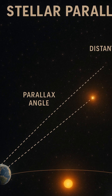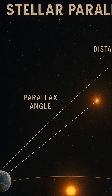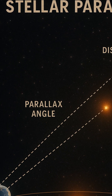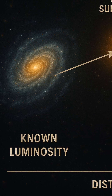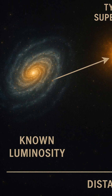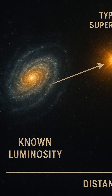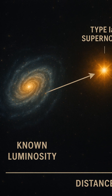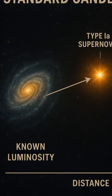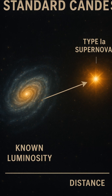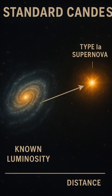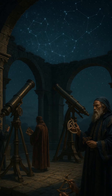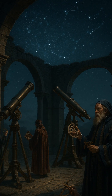To go farther, we need standard candles — astronomical objects whose intrinsic brightness is known. One famous example is the Cepheid variable star. These stars pulse in brightness at regular intervals, and the period of that pulsation tells us how luminous they truly are.